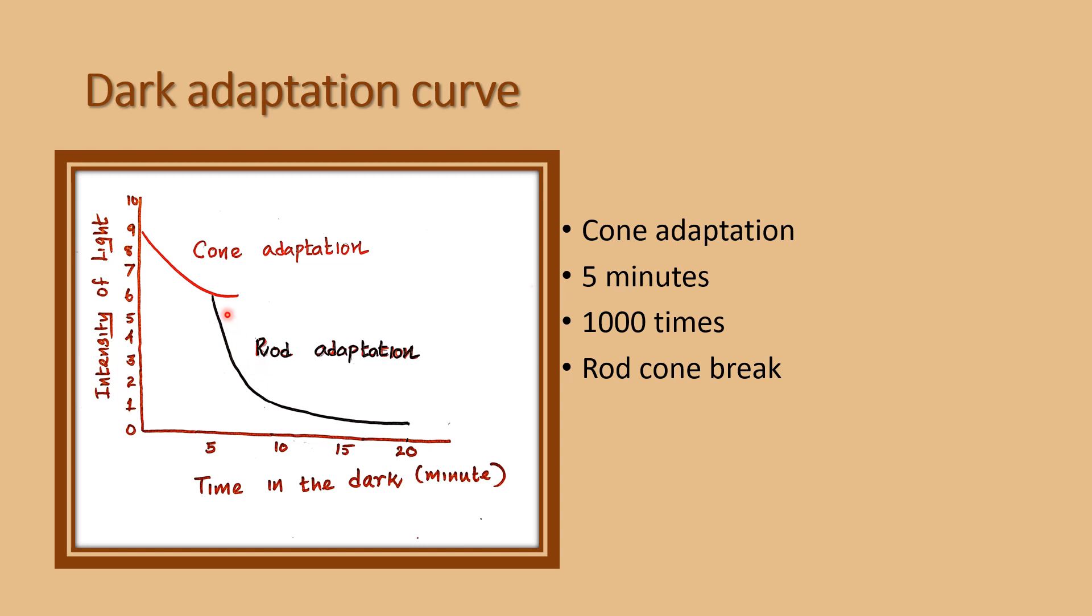From here onwards, the rods take over the action. The sensitivity of the rods increases much more than cones. Rod adaptation is completed in 20 minutes. The sensitivity of the eye increases one million times during rod adaptation. After 20 minutes, the eye is completely adapted to the darkness.